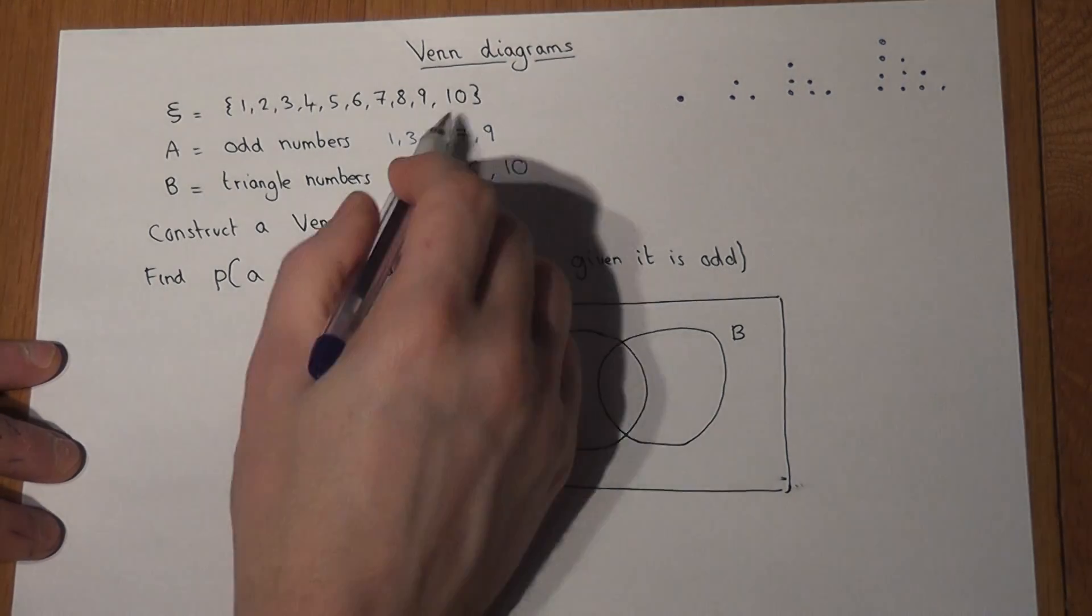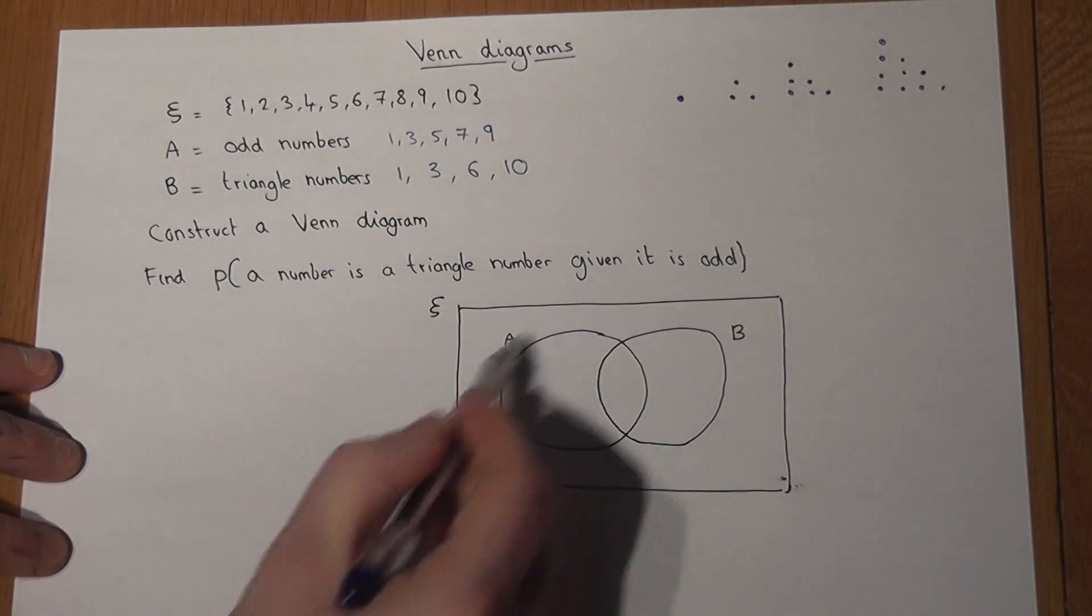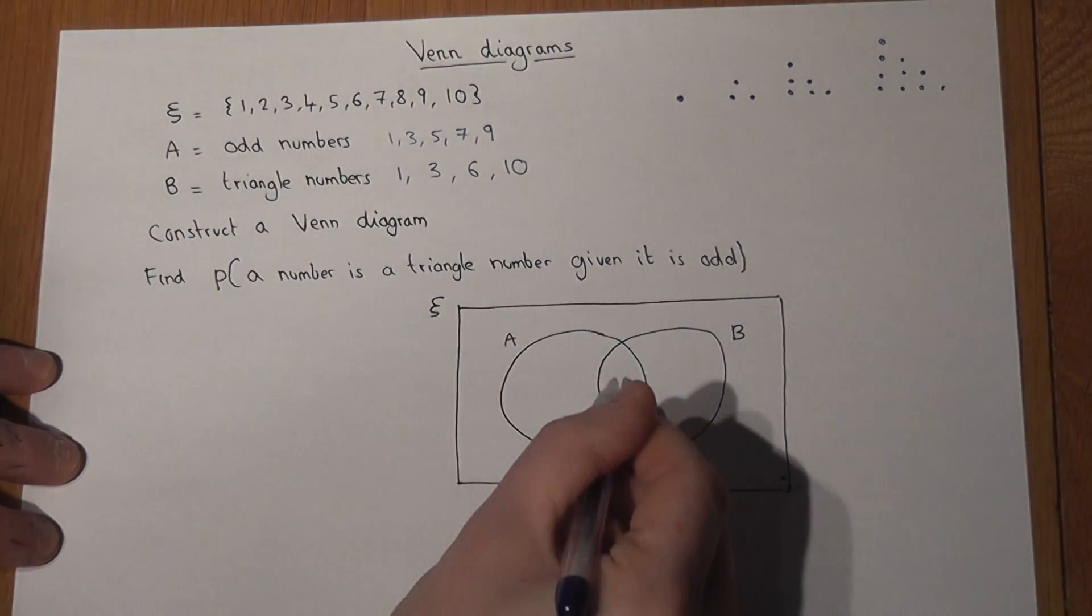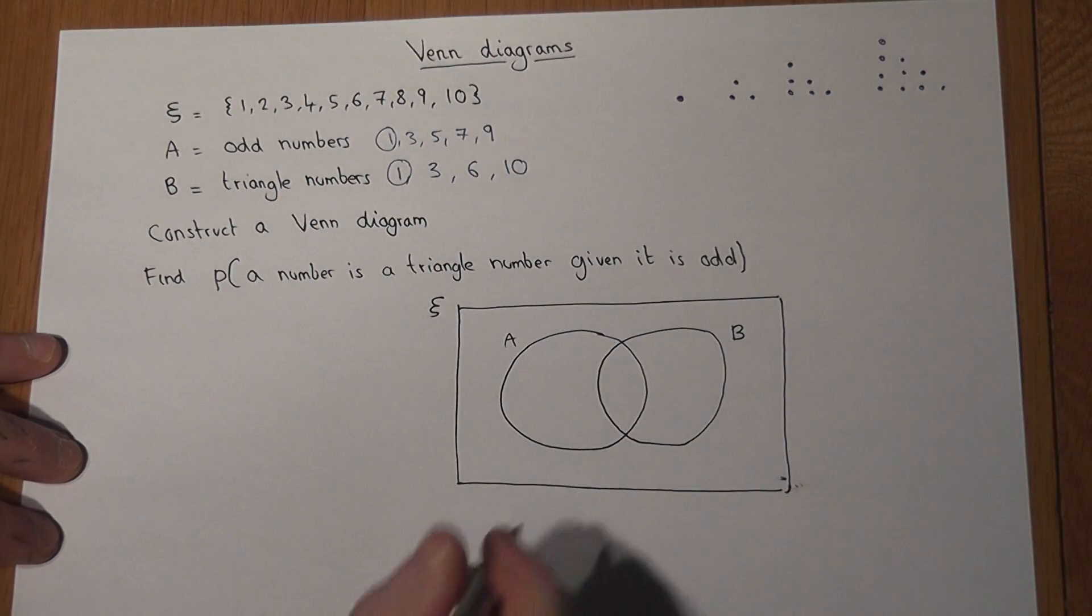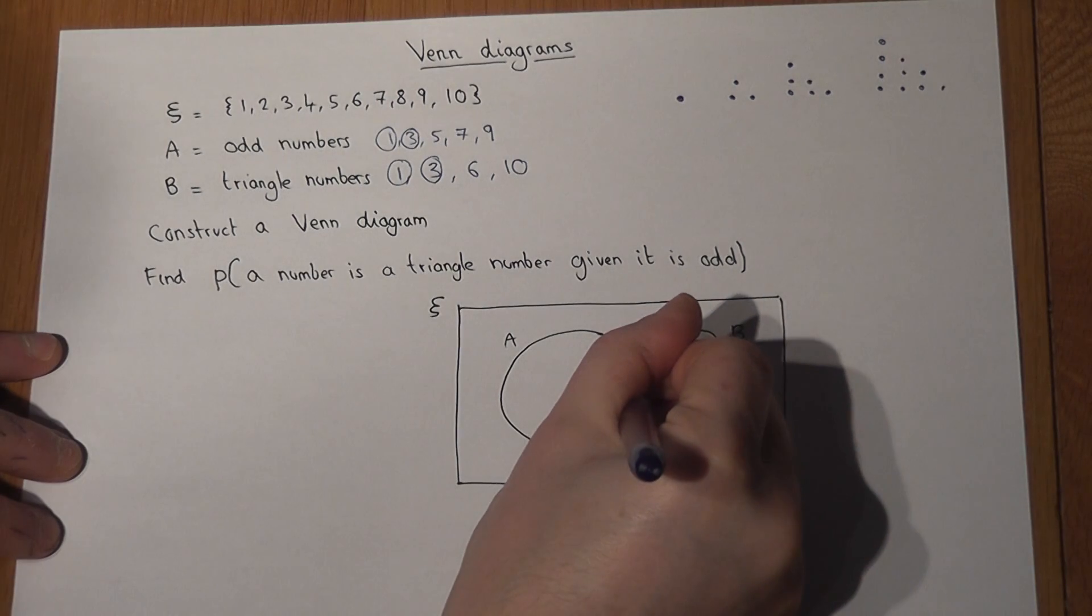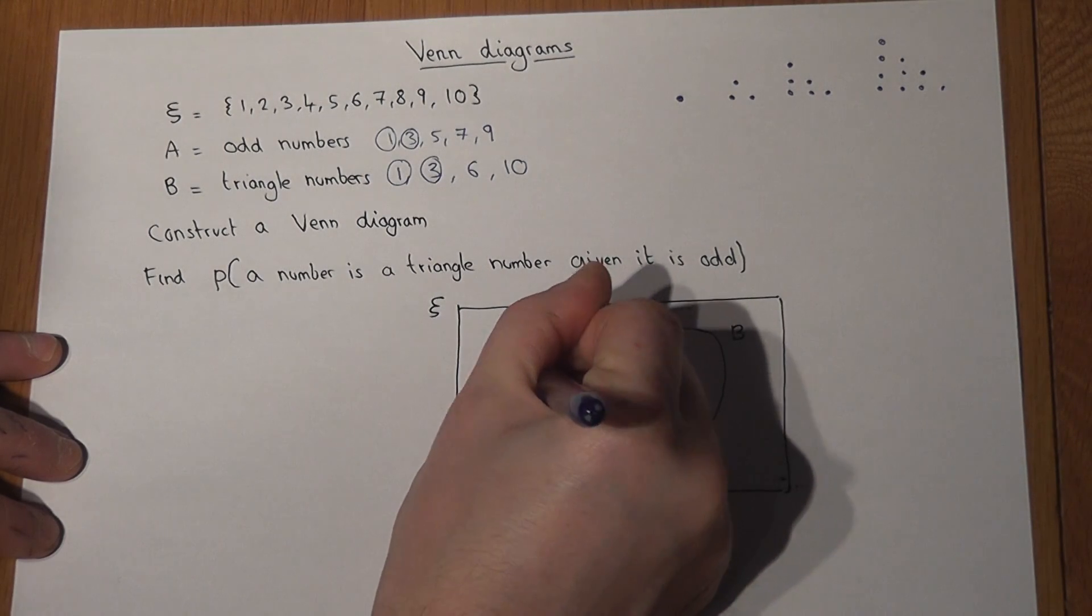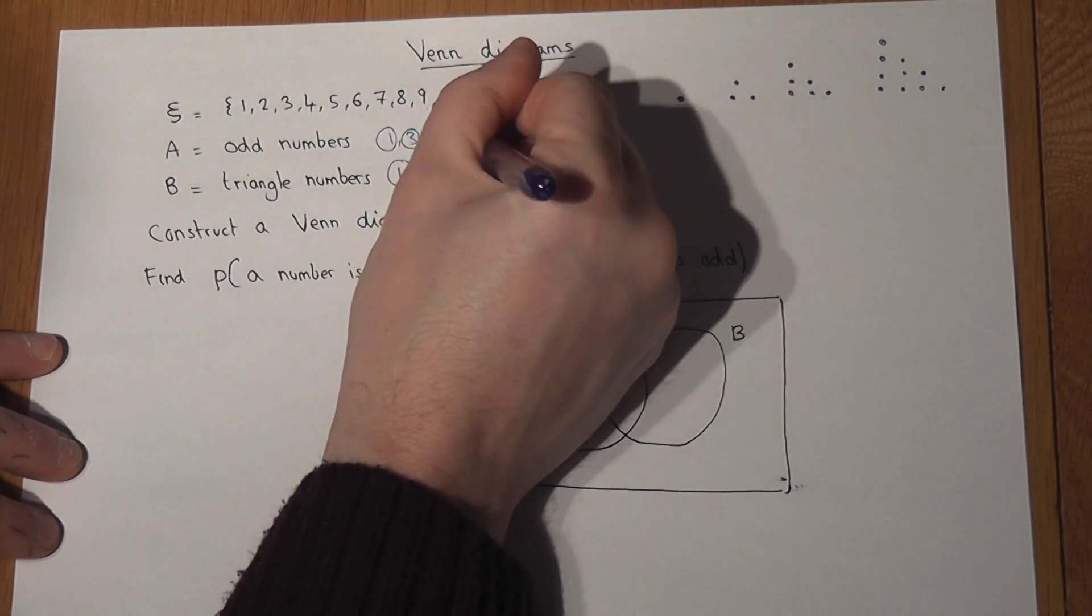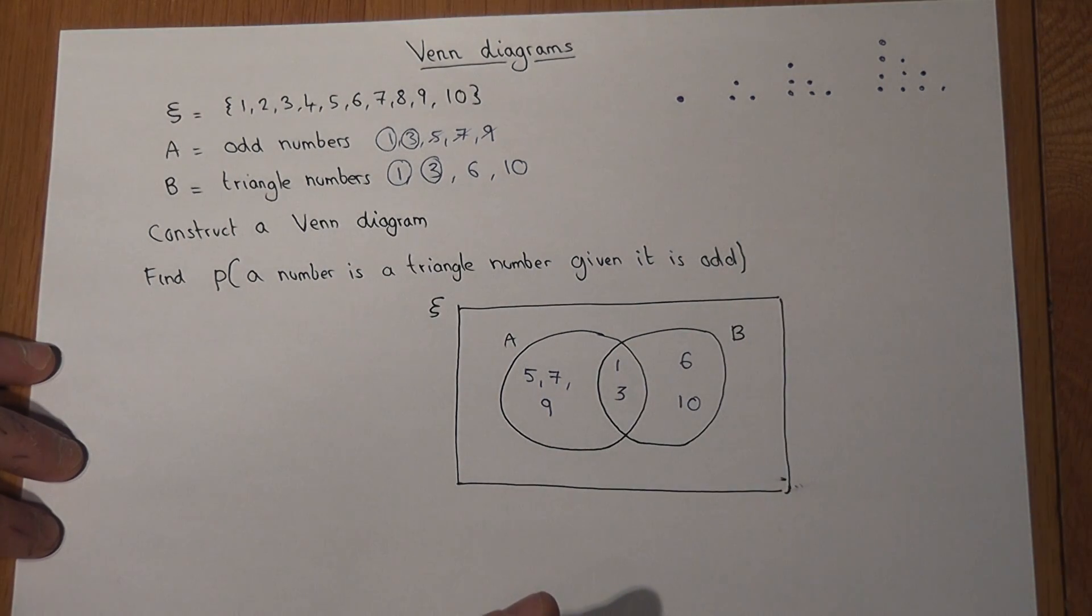And I must put these numbers into this diagram somehow. And I write all of A within the A circle and all of B within the B circle, but those which are in both sets go in the middle. So I can see how 1 is both odd and a triangle number. And 3 is also within both of those two sets. 5, 7, 9 are only odd. And 6 and 10 are the triangle numbers.